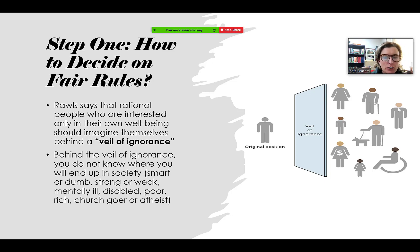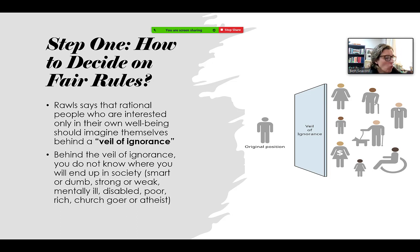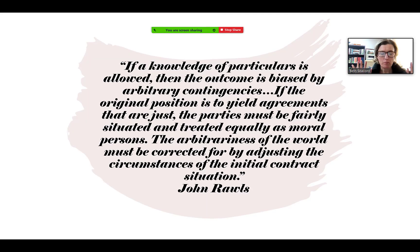All you are is this rational, self-interested being. And from this position, what sort of rules would you create for the world you're about to be born into? Rawls thinks that behind the veil of ignorance is how we would make just laws.